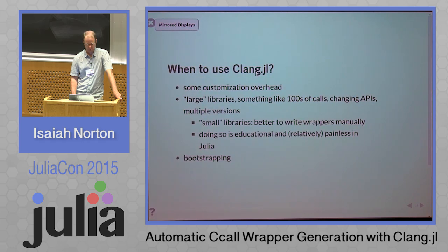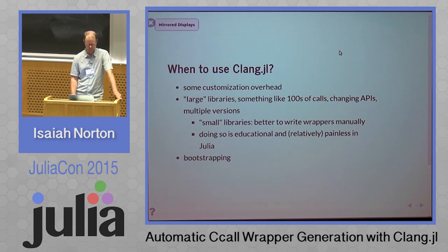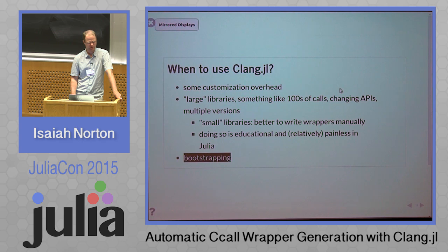One question that comes up is when to use Clang.jl. There is some initial setup overhead, so my suggestion is generally libraries with over 100 calls, where it gets tedious to write everything out yourself. It's pretty educational to write wrappers and pretty easy to do so in Julia, so if it's a small API with 10 or 20 calls, just do it manually — it's not worth the trouble. One thing some people have done is to bootstrap with Clang.jl without developing a lot of customization: write out the output once, customize everything, and never use it again, which is a nice way to do things.